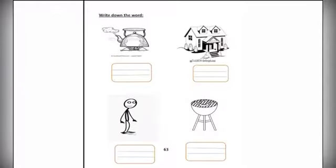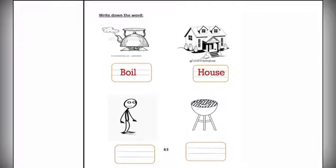ZIPPER — write down the word. The first one: POIL. The next one: HOUSE. The next one: SIN. And the last one here, we have BARB-B-Q.